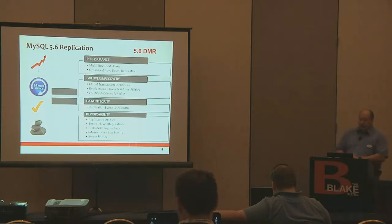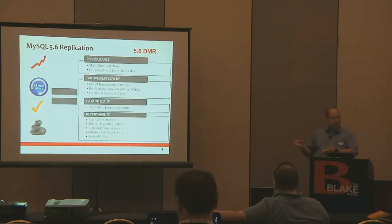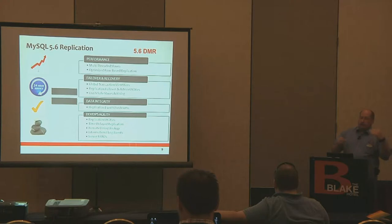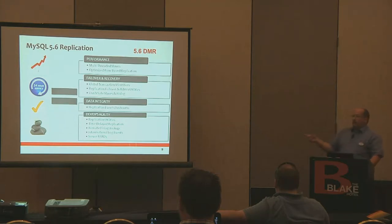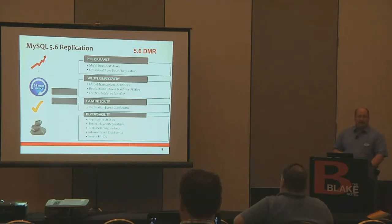On the development side, we have replication utilities, time-delayed replication — where a write goes to the master but you want to wait until a certain time expires before that occurs on the slaves. This is useful for validation or long processes that must occur before changes are replicated. We also have remote binlog backup coming. Along with informational log events that make searching the binary log easier. And server UUIDs — for those who use replication, server IDs can be a pain when setting up a lot of servers. UUIDs will eliminate that; you don't have to worry about incrementing the server ID anymore.